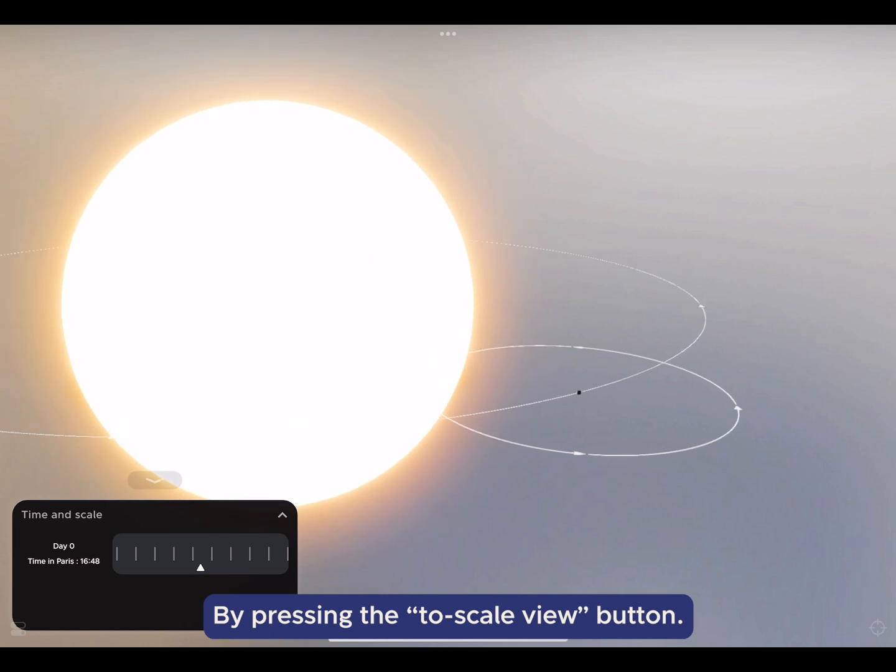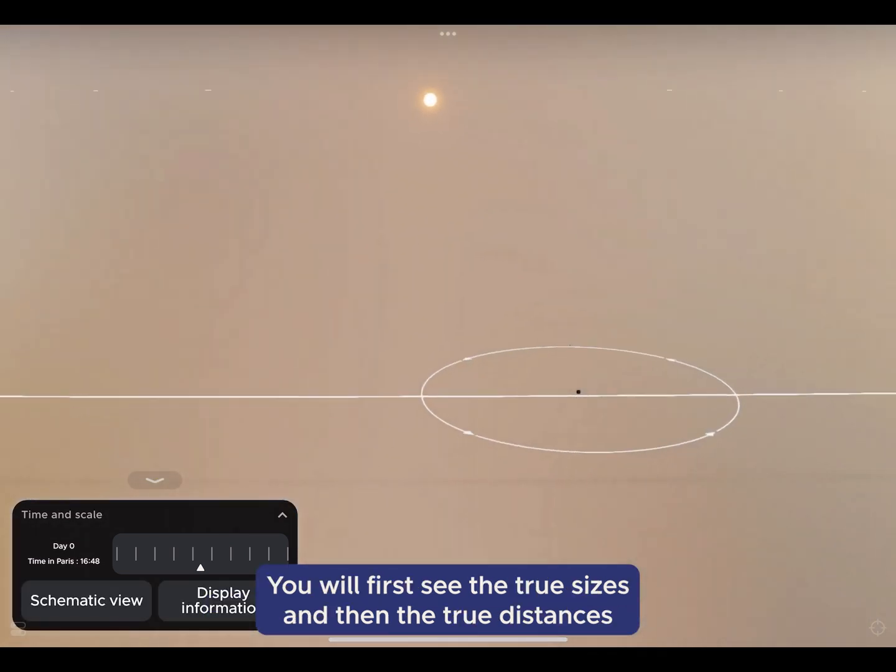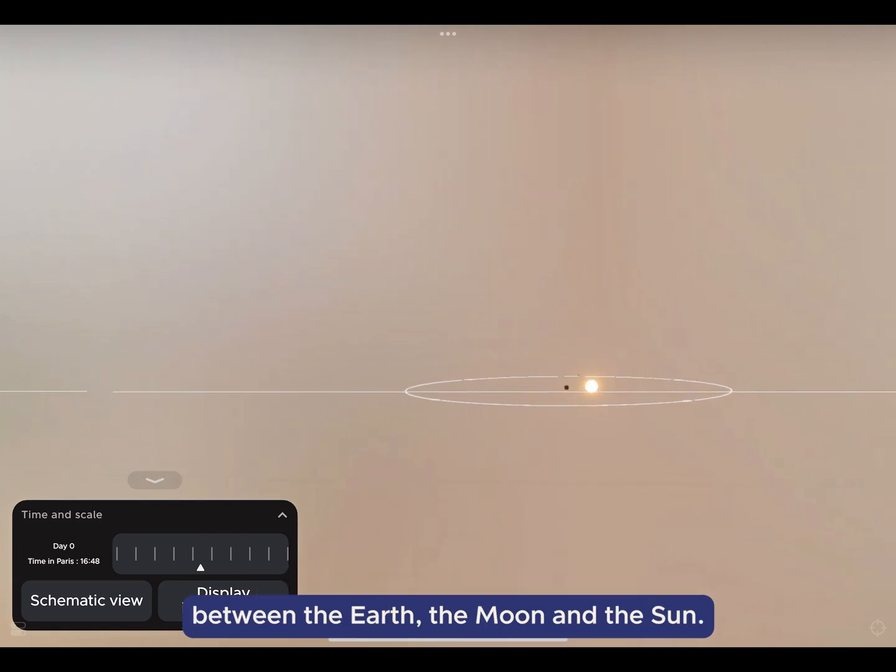By pressing the to scale view button, we will first see the true sizes, and then the true distances between the Earth, the Moon and the Sun.